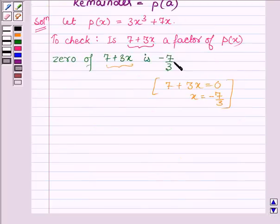Now by remainder theorem, 7 plus 3x is a factor of p(x) if p at minus 7 upon 3 is equal to 0. So what we will do is we find the value of the polynomial p(x) at minus 7 upon 3.